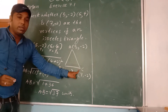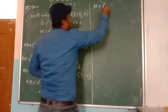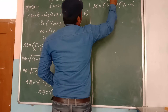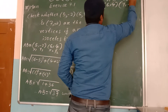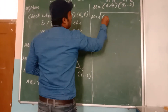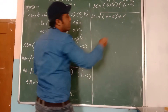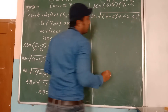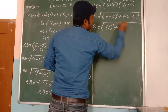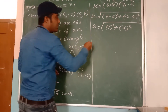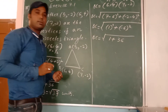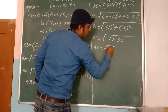Similarly, I will find out BC. BC is equal to B at 6 comma 4 and C point is 7 comma minus 2. Again I will apply the distance formula: BC is equal to square root of x2 minus x1 whole square plus y2 minus y1 whole square. That is 7 minus 6 whole square plus minus 2 minus 4 whole square. BC is equal to square root of 1 square plus minus 6 whole square, that is 1 plus 36. Therefore BC is equal to root of 37 units.